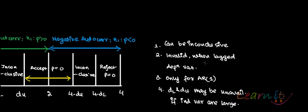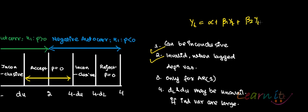Problems of the Durbin-Watson test: First, the test can be inconclusive when D lies between D_L and D_U, or between 4 - D_L and 4 - D_U. Second, it is invalid when lagged dependent variables are included as regressors — for example, yₜ = α + β₁xₜ + β₂y_{t-1} + uₜ. Third, the test is valid only for first order autocorrelation and cannot test for second or higher order. Fourth, when the number of independent variables is very large, D_L and D_U may be unavailable from the tables.